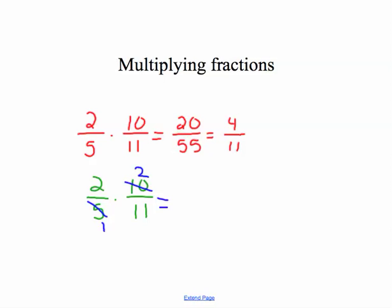And then multiplying across, I still get 4 elevenths as my answer. By canceling, you make the numbers smaller within the problem and therefore smaller for the answer and avoids reducing at the end of the problem.